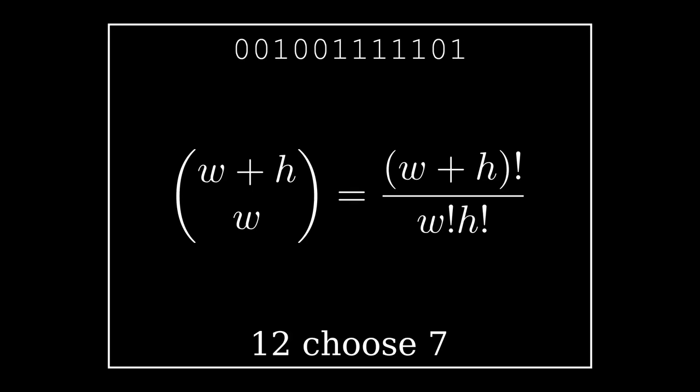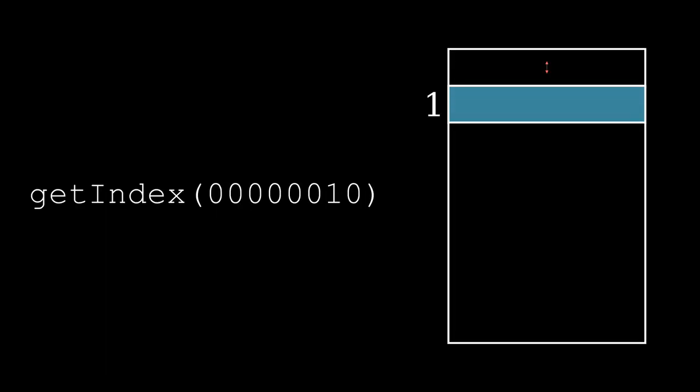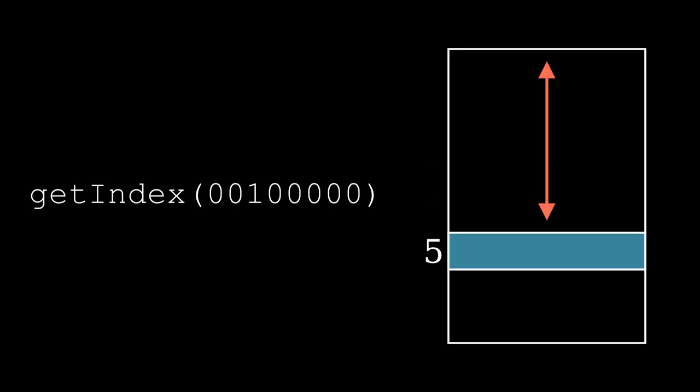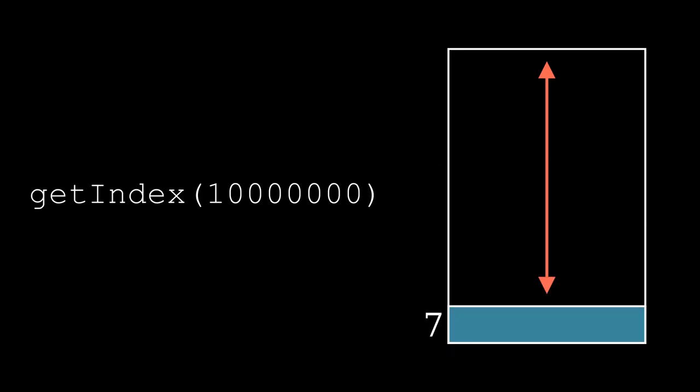But how do we index this array? We need to implement a function that converts binary encodings into an array index such that there are no collisions and no gaps left unused.